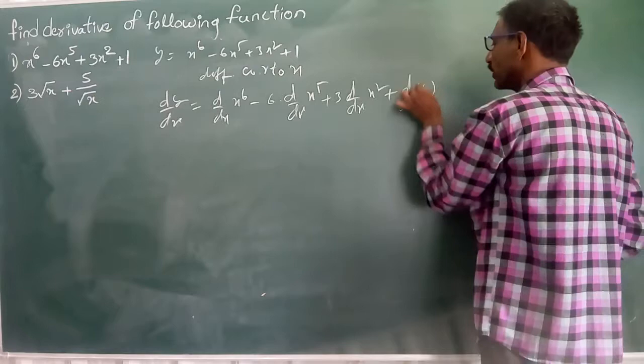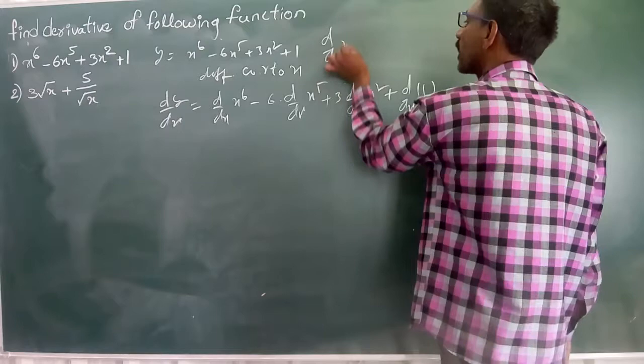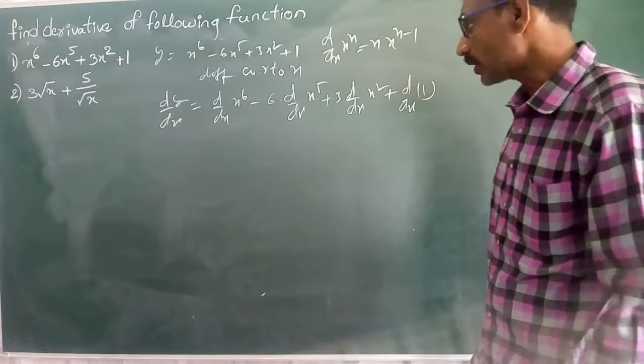Constant derivative is 0. We are just applying d by dx of x power n is equal to n into x power n minus 1. Therefore this is in the form of this.